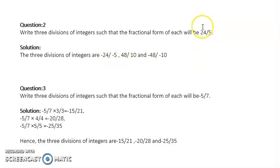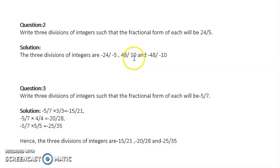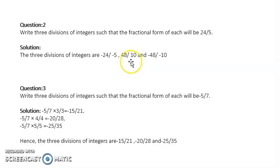For the second one, when I multiply this fraction's numerator and denominator by 2, I get 48 upon 10. So that is another answer. And if I give 48 a negative sign and 10 a negative sign, I get negative 48 upon negative 10. Again the two minus signs cancel, leaving 48 upon 10, and when I simplify by dividing by 2, I get 24 upon 5. So this is my third answer. These are 3 divisions of integers whose fractional form is 24 upon 5.